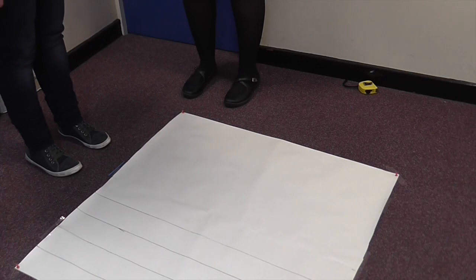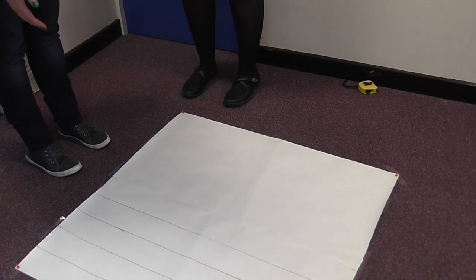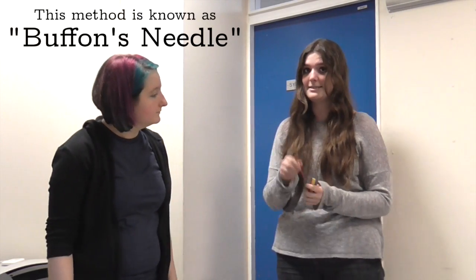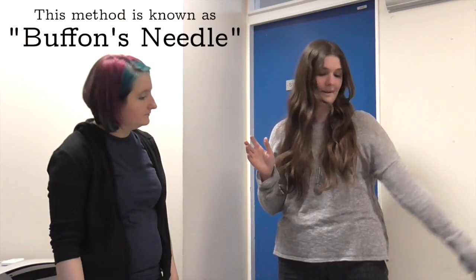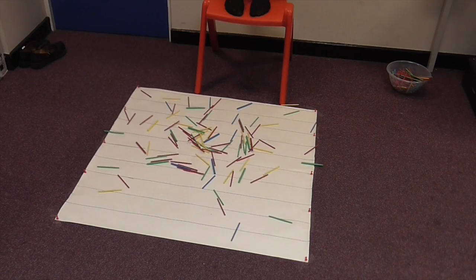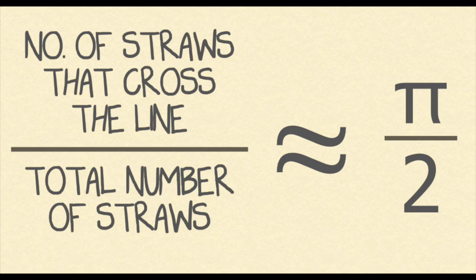So we have a load of these straws all the same length and we have a piece of paper with some parallel lines drawn that are all the same width apart as these straws. Now what we're going to do is we're going to get absolutely loads of them and drop them onto the paper and in theory the proportion of these straws that cross the lines to the total number of straws should approximate pi over two. So we double it and hopefully we get pi.